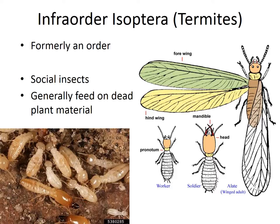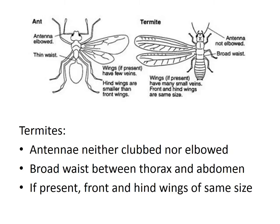Termites are social insects, like ants or honeybees. Social insects have a couple of important characters: they all live in colonies, they show cooperative care of the young, they show division of labor into reproductive and non-reproductive groups or castes, and there is an overlap in generations within a single colony. Termites generally feed on dead or decaying organic material. There are workers, soldiers, and what are called alates — or winged adults — that are the reproductives, and then there's a queen. They're all very ant-like, almost.